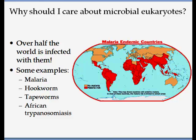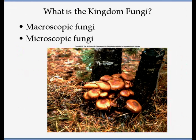Diseases can be caused by a fungus, an algae, a protozoan, or a helminth. Some examples of these are malaria, hookworm, tapeworms, and African trypanosomiasis. So let's look at the first kingdom — fungi.